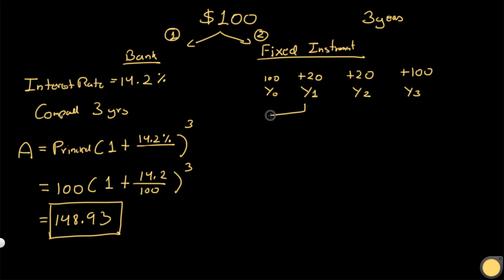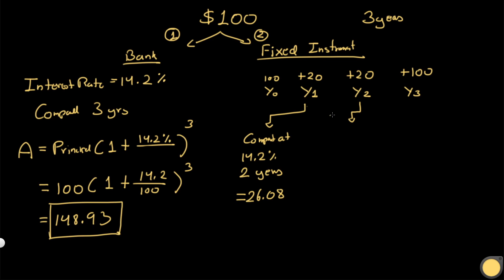At year one we receive twenty dollars and put it in the bank compounded at 14.2 percent for two years — since we need the money back by end of year three. Running it through the formula gives us $26.08. At year two we receive another twenty dollars and compound it at 14.2 percent for one year only, giving us $22.84.